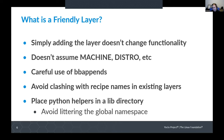A friendly layer has careful use of bbappends, so you try not to tread on people's toes. You make things configurable. Avoid clashing with recipe names in existing layers — before you add a new recipe to your layer, you can go to the layer index and search for the recipe name you're planning to use, and check that you're not clashing with something in another layer. And if you've got Python helper functions you use in various places, avoid littering the global namespace. Don't put them in a class that's forcibly included everywhere. Place them in a lib directory and import them where you use them.